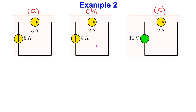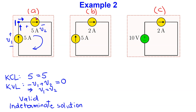Consider the next example involving ideal independent current sources. For interconnection A, applying Kirchhoff's current law to node one, we can see that the sum of currents entering is five amps and the sum of currents leaving is also five amps. Thus, KCL is satisfied. Applying KVL to this single loop circuit, we can see that the voltage drop across the two current sources must be the same. Thus, this interconnection A is valid but has an indeterminate solution.